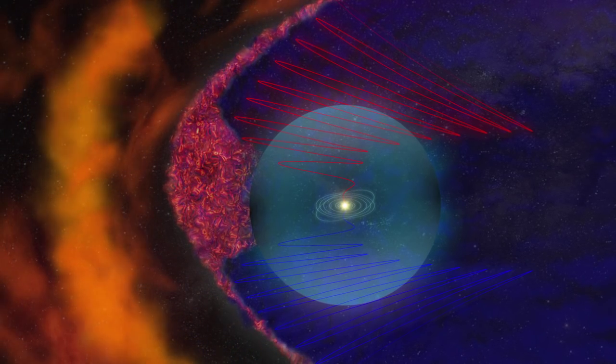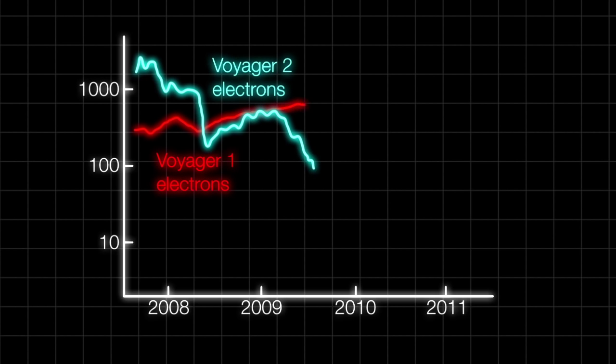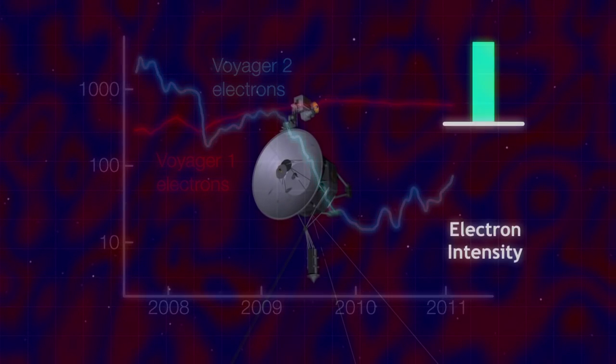The nature of the bubble region explains why Voyager 2 has been seeing variations in the number of energetic particles compared to Voyager 1. Because of its path, Voyager 2 has been passing in and out of the bubble region.